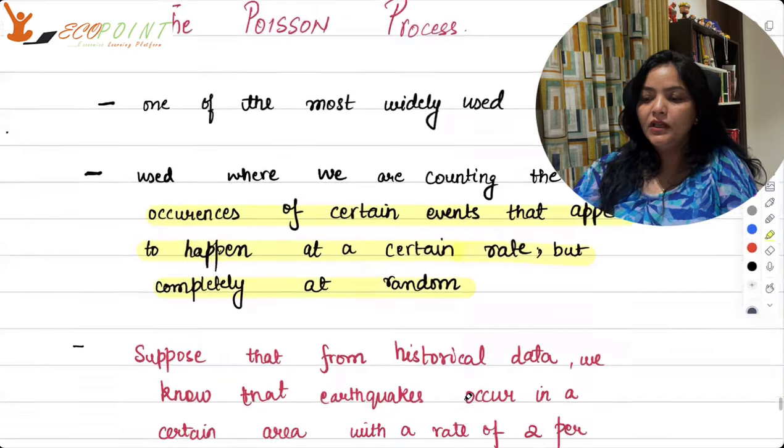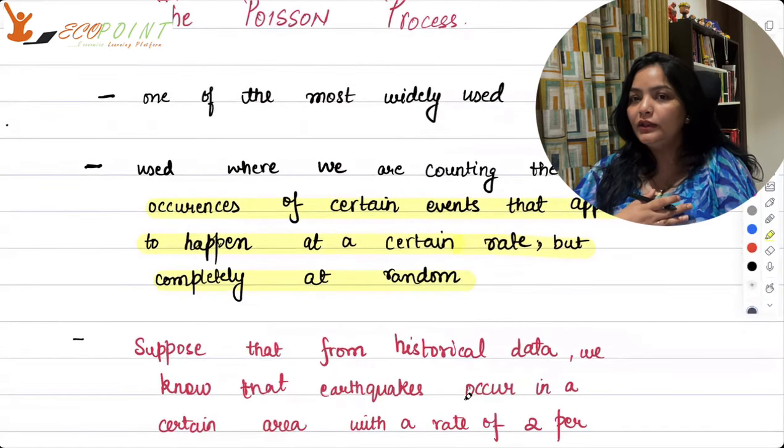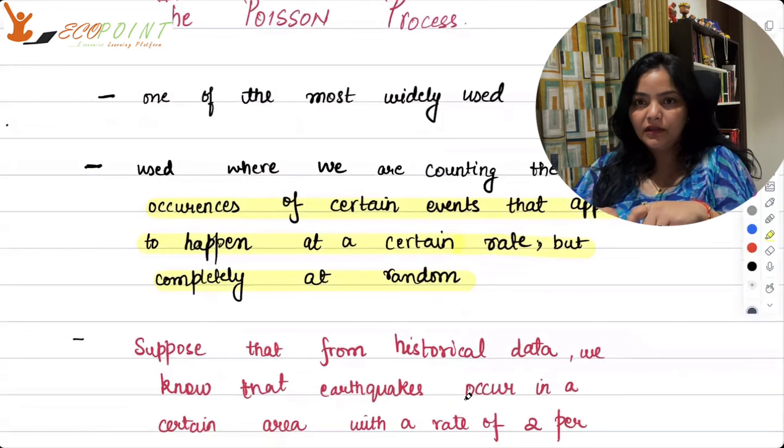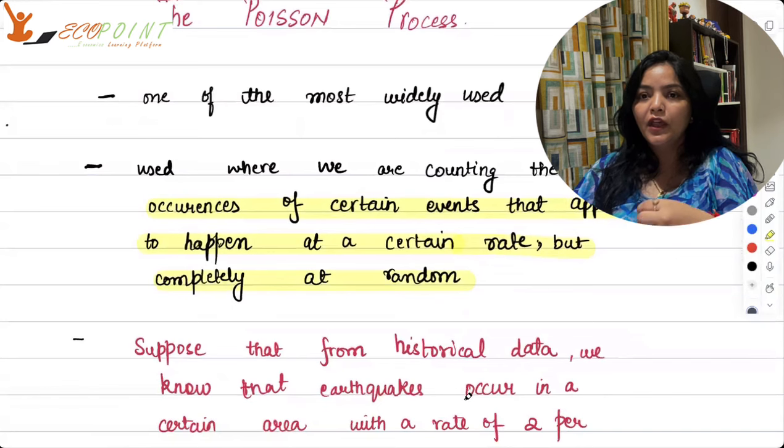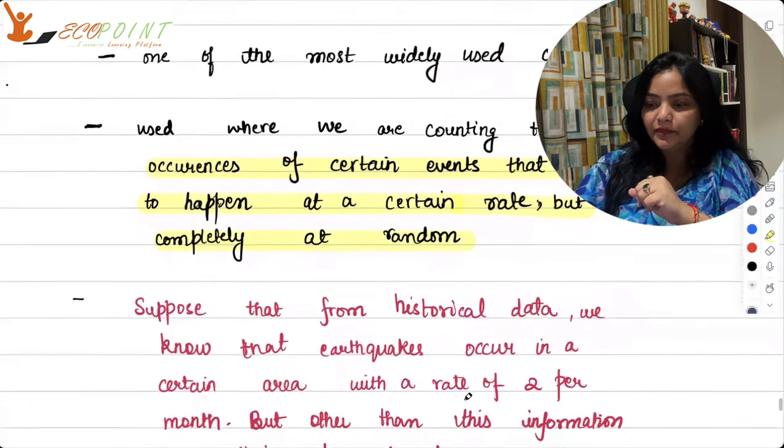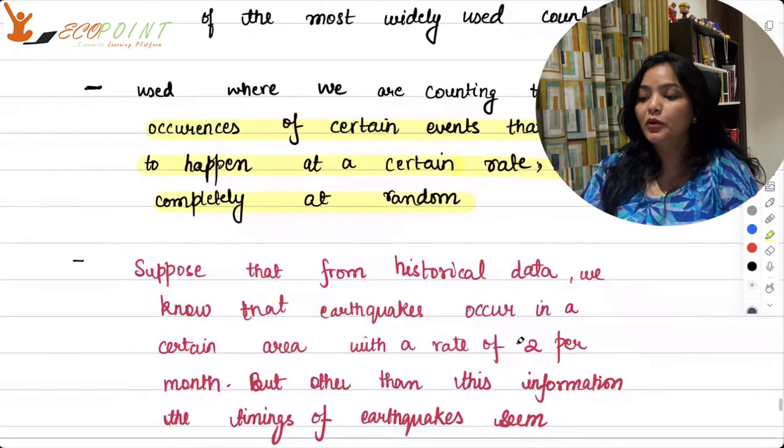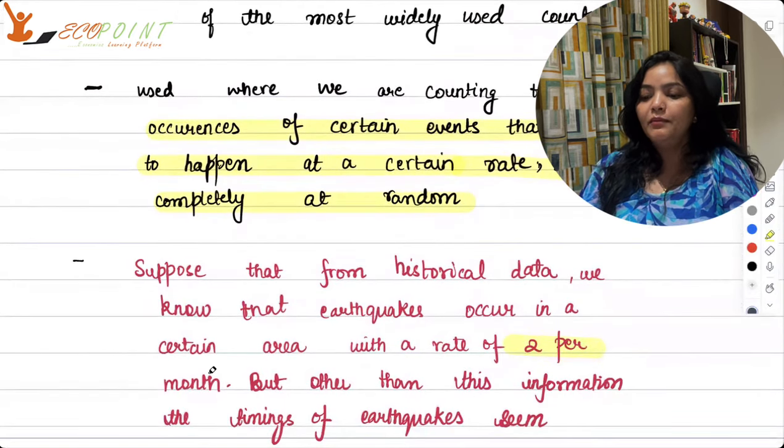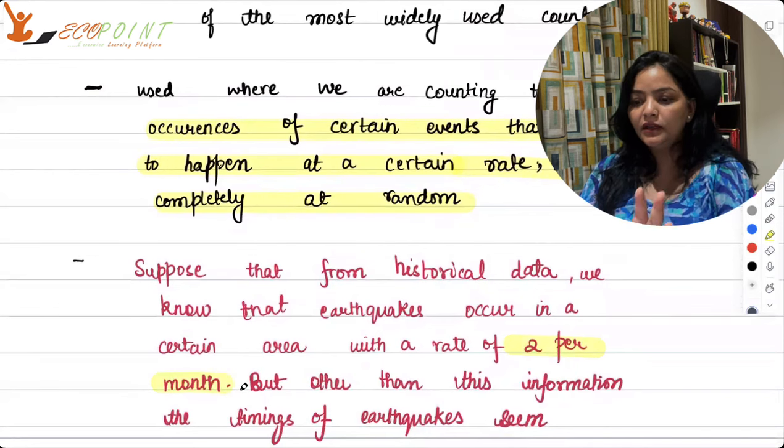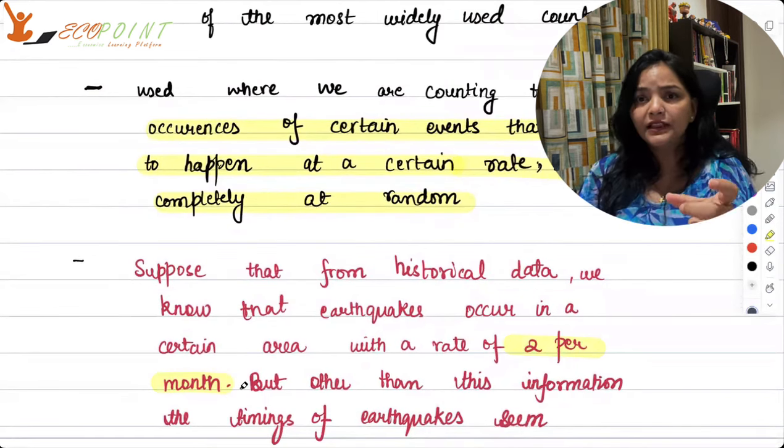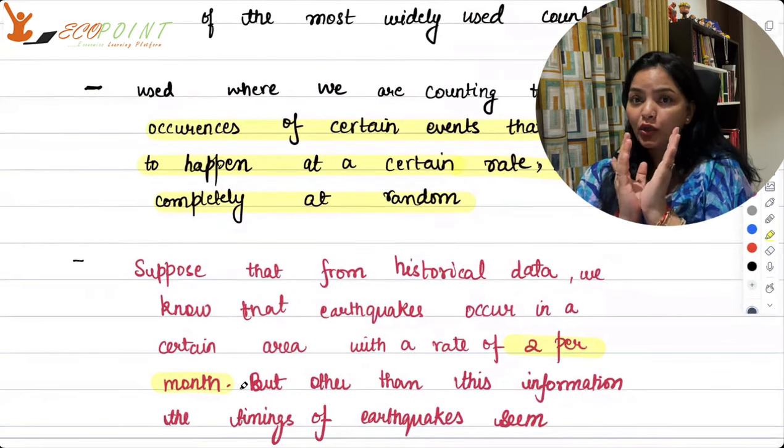Now what does this mean? Take an example. Now suppose from historical data, we know that earthquakes occur at a particular region. Earthquakes occur say two times in a month. So the rate of occurrence of earthquake in this region is two per month.